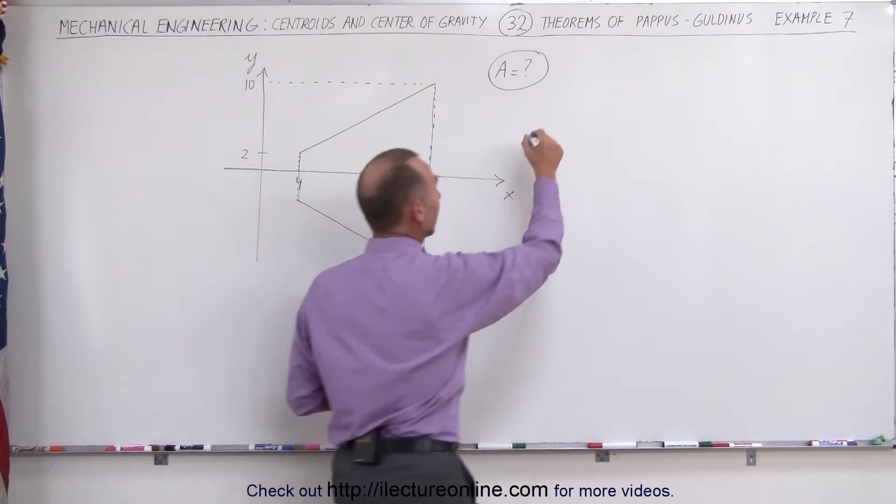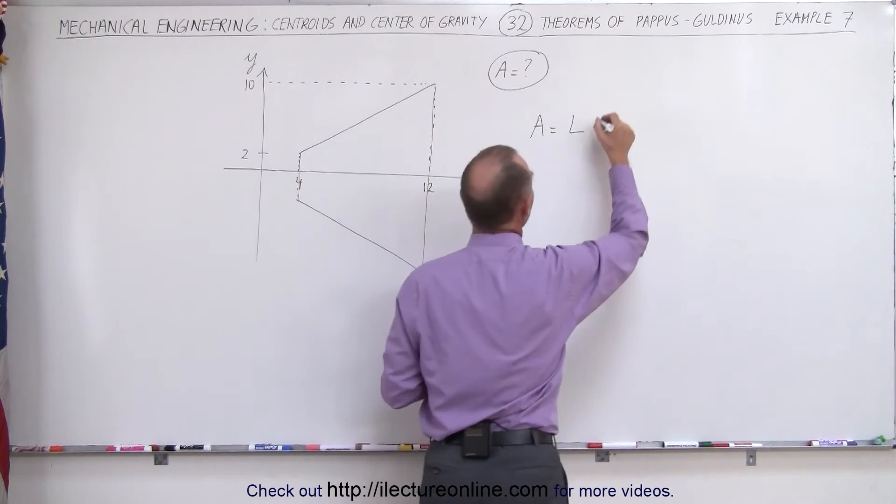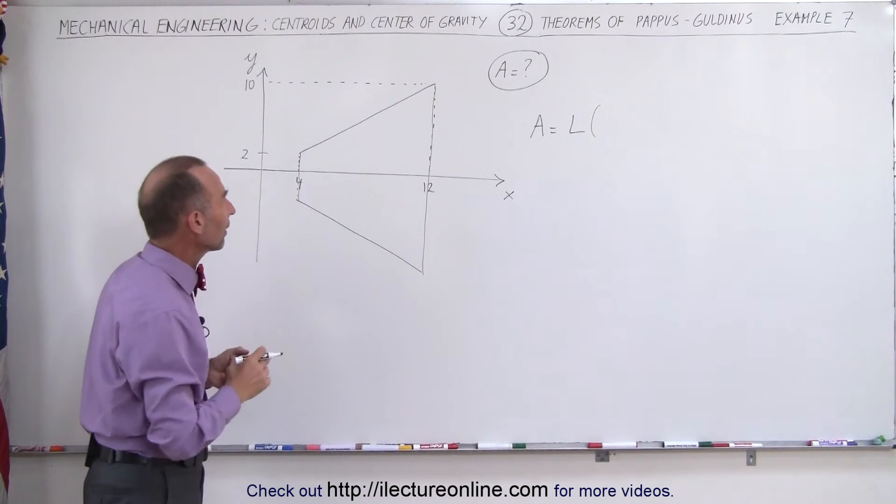Again the equation is that the area is equal to the length of the segment, that would be the length of this right here, times the distance traveled by the center of mass, by the centroid of that line.